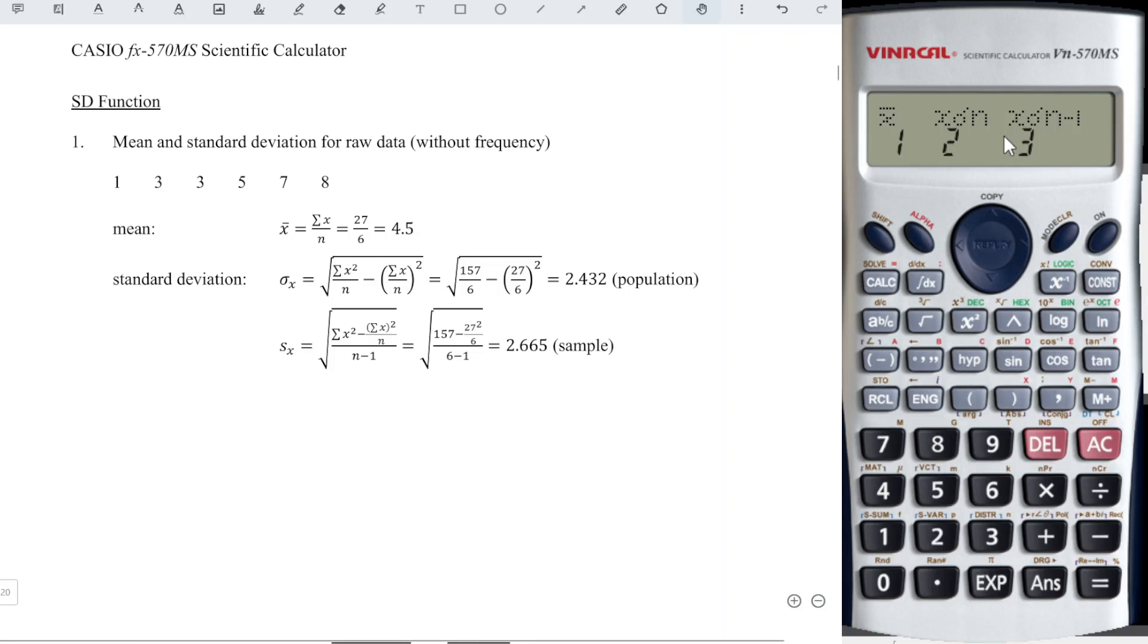So which means that if the question asks for population standard deviation, then we should choose number 2. And this is the value rounded to the nearest 3 decimal points. And Shift 2 again, if the question asks for sample N minus 1, so we choose 3 and equal. And this is also the value rounded to the nearest 3 decimal points.